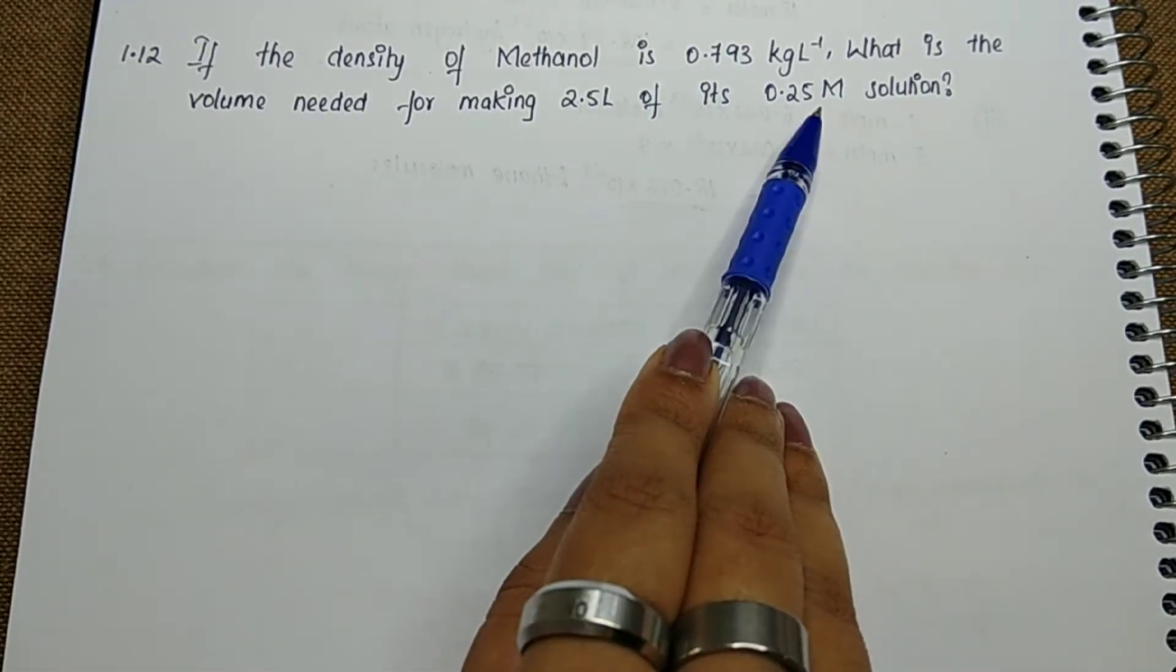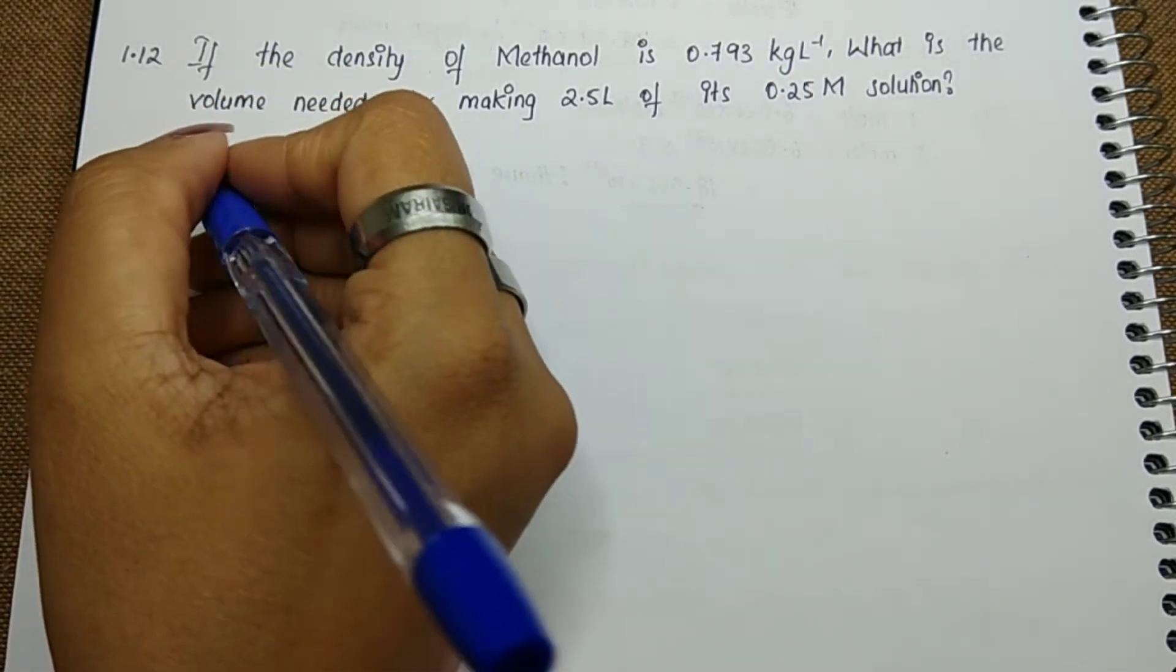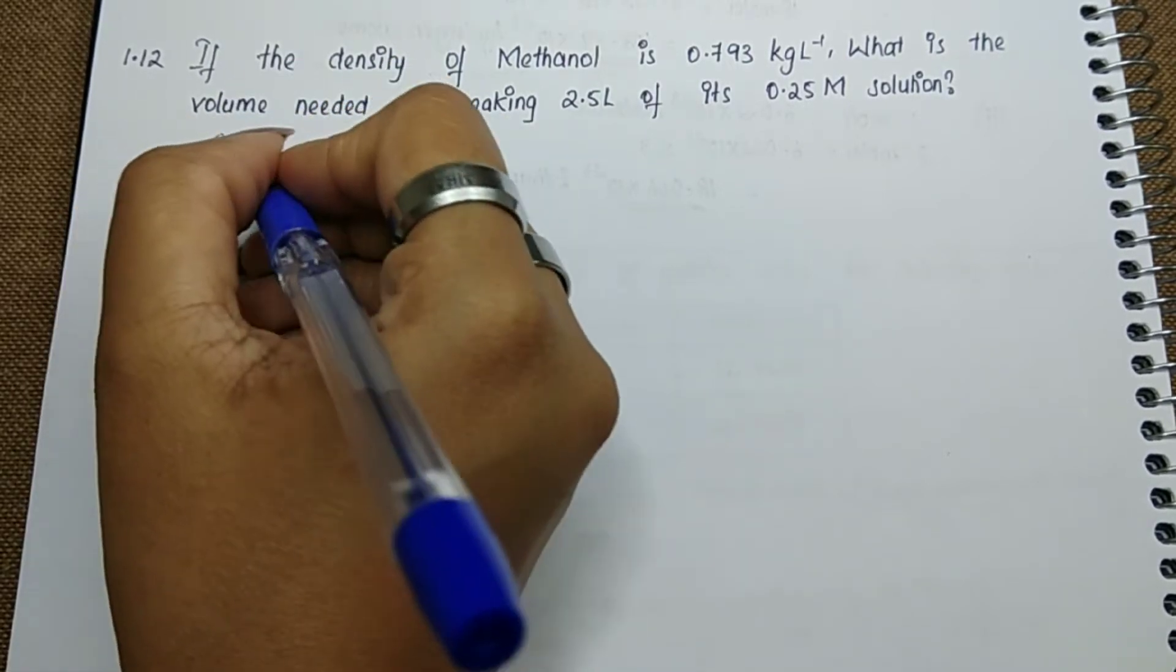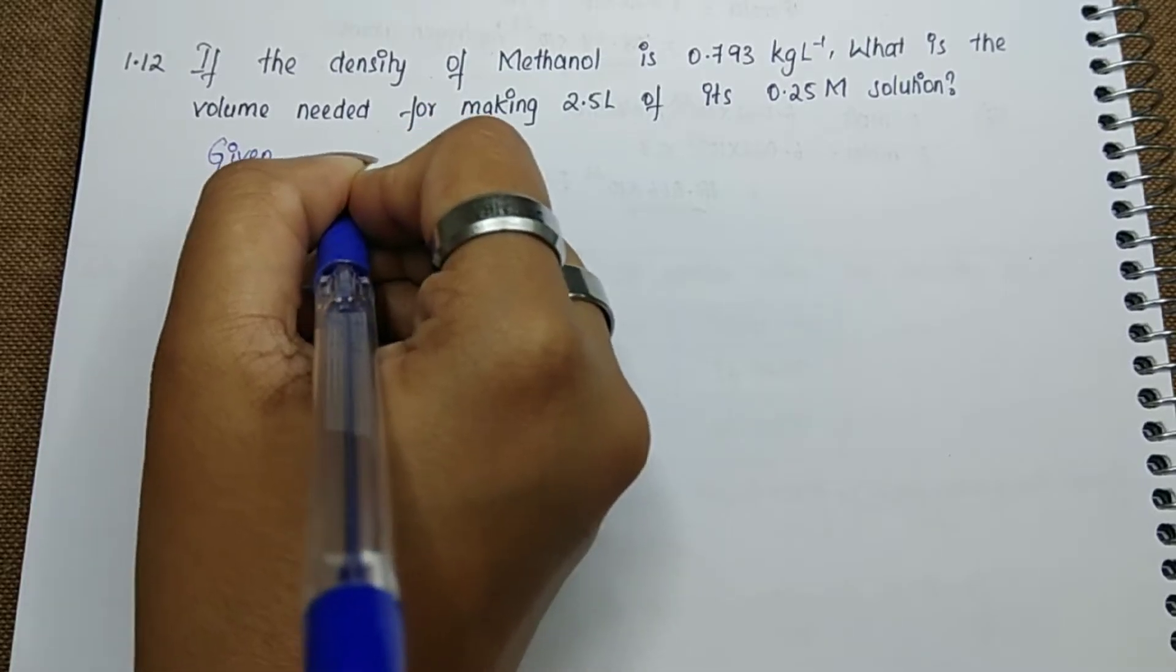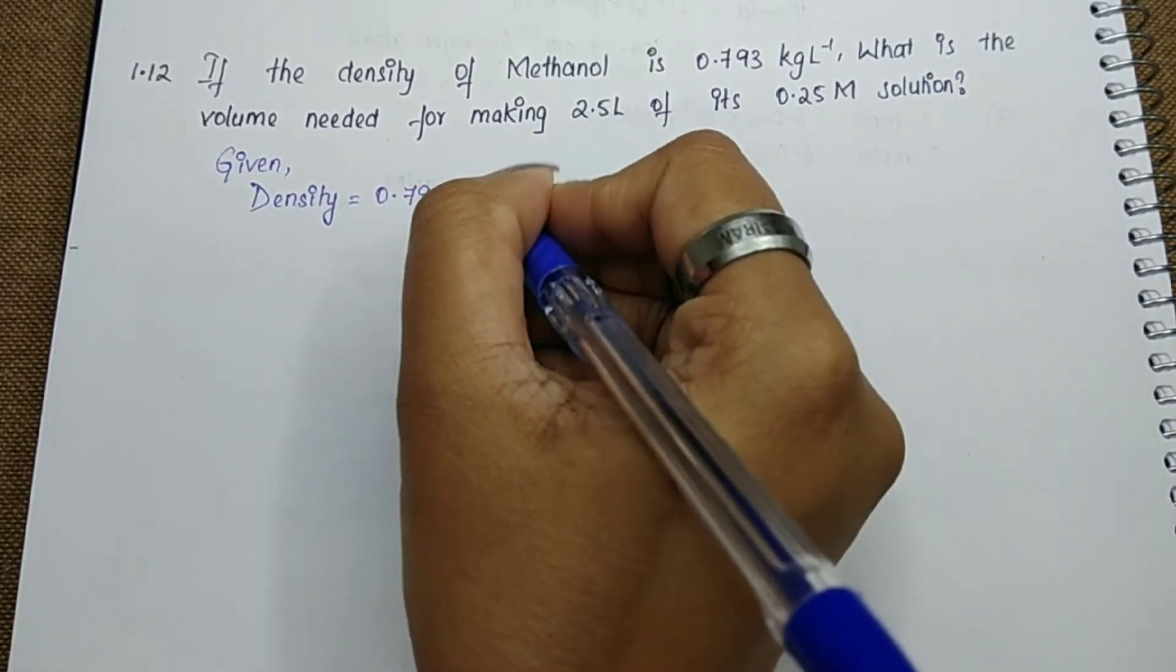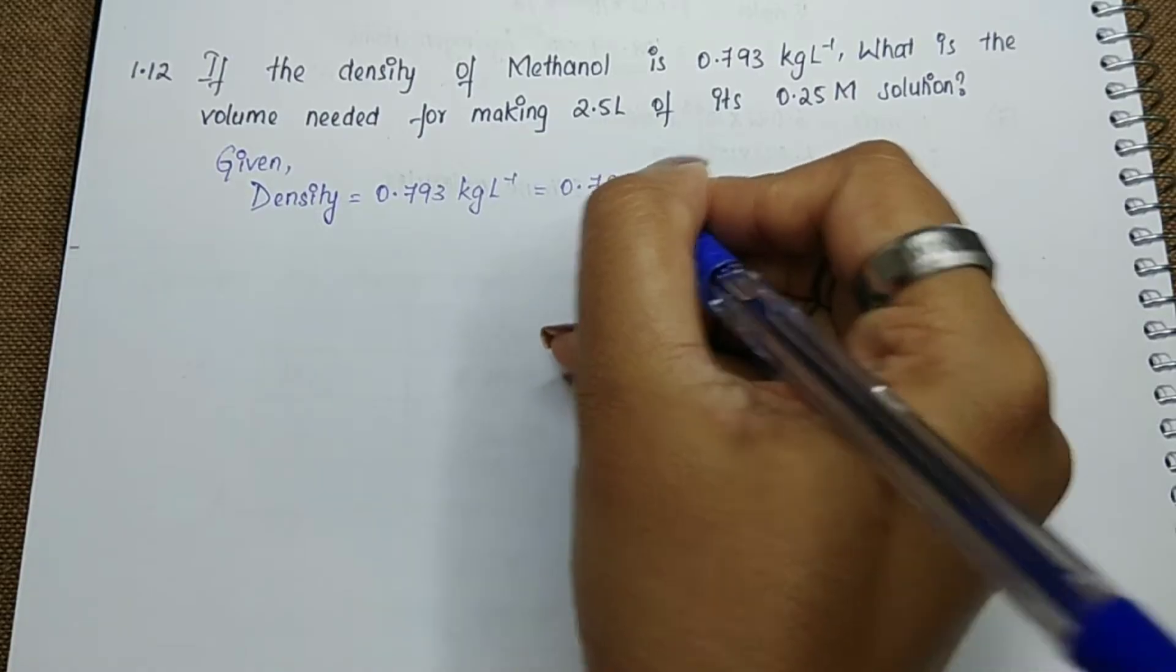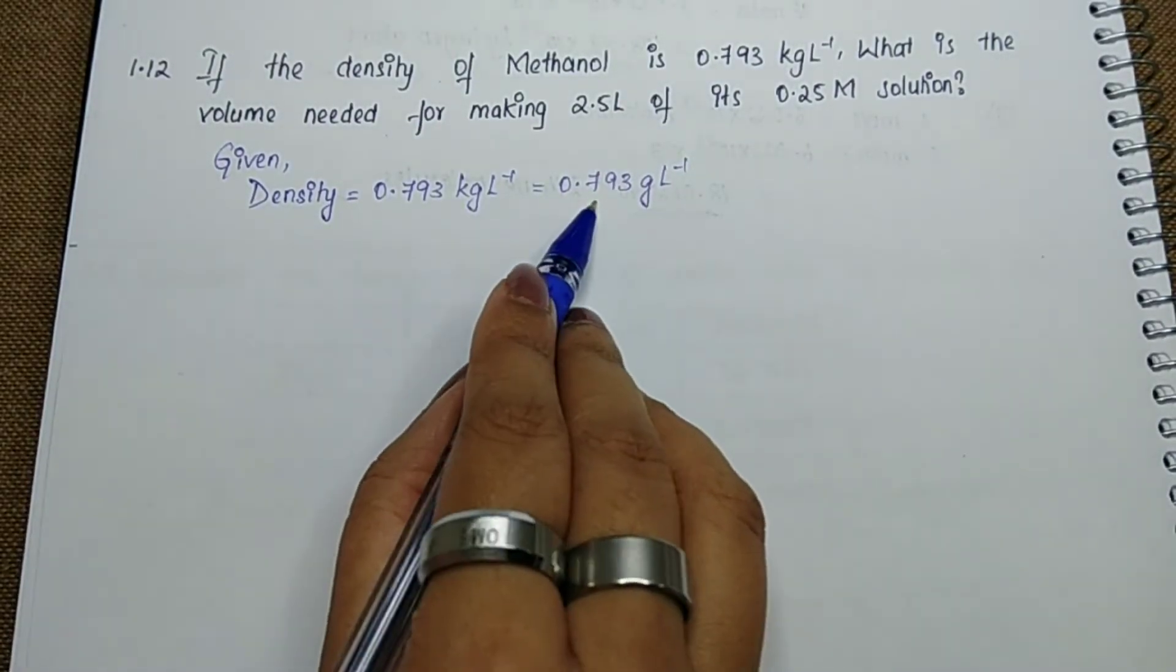Let's write down these given values first. Density is 0.793 kilogram per liter, which can also be 0.793 gram per liter. We will be using this value to do the calculation.